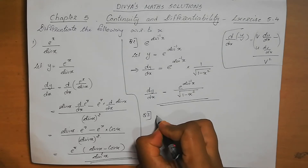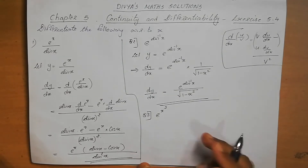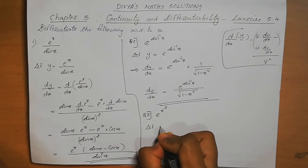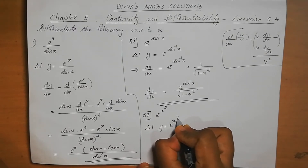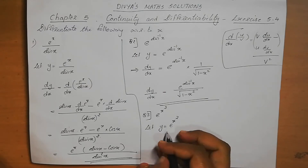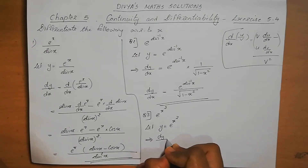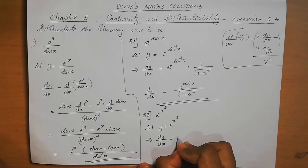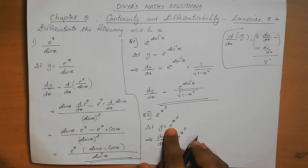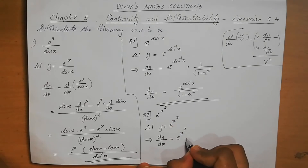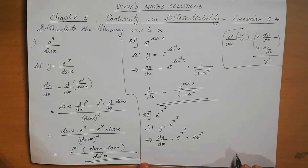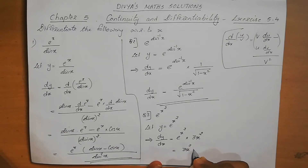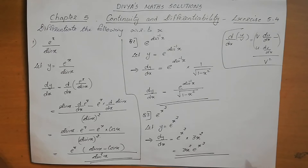Question number 3: e^(x³). Let y equal to e^(x³). Differentiating with respect to x: dy/dx equals derivative of e^(x³). Derivative of e^x is e^x, so we get e^(x³), then multiply by derivative of x³, which is 3x². So dy/dx equals 3x² e^(x³). This is the answer.